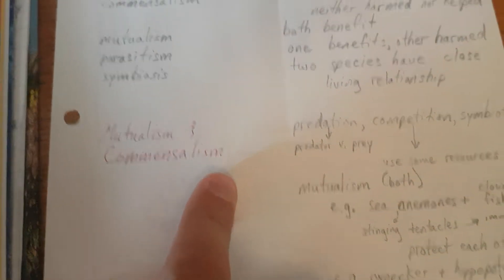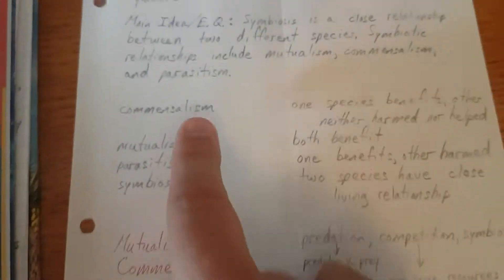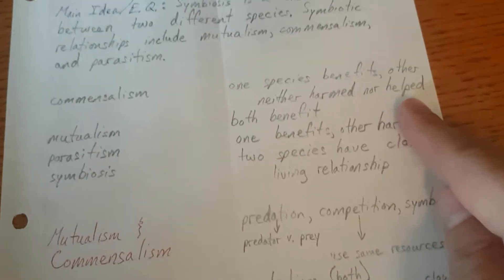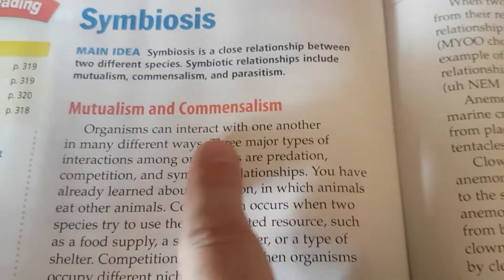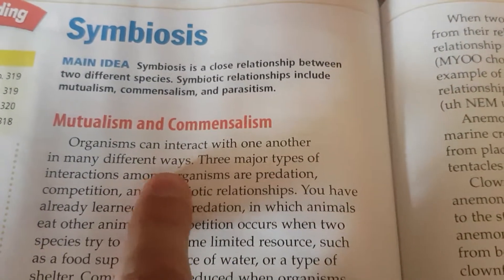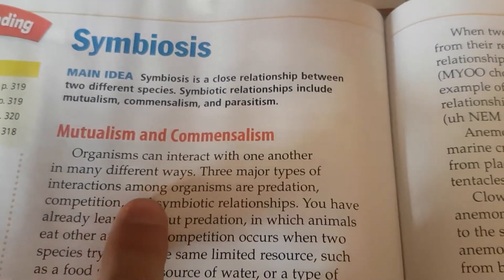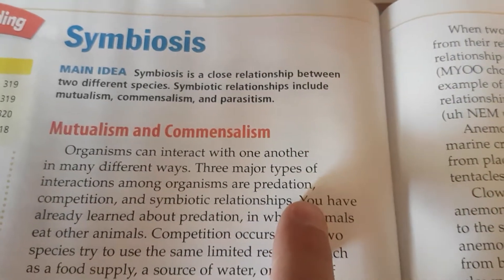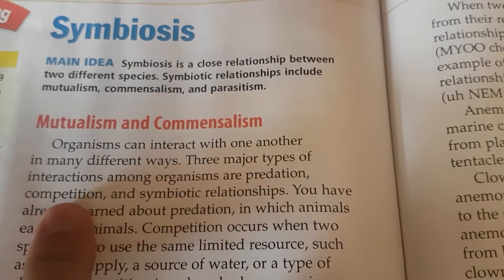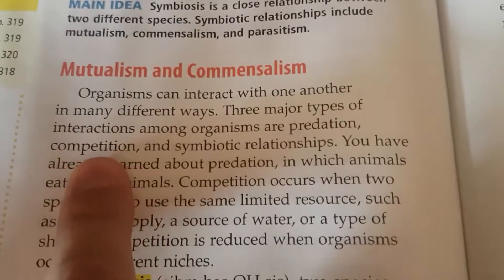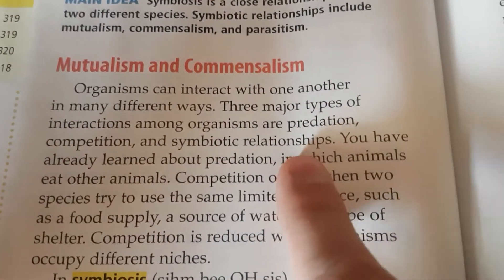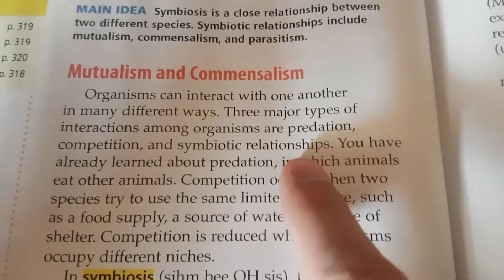Okay, first section: Mutualism and commensalism. Let's remind ourselves what these things mean. Mutualism — both benefit. Commensalism — one benefits, the other is neither harmed nor helped, so it basically kind of doesn't notice. Organisms can interact with one another in many different ways. Three major types of interactions among organisms are predation, like predators and prey; competition, so they're competing with each other; and symbiotic relationships — those are the ones we just talked about in our vocabulary words.